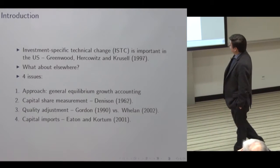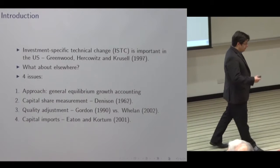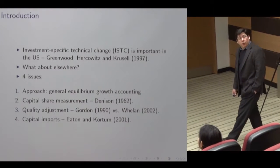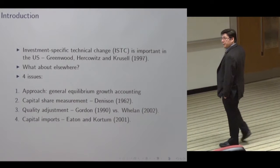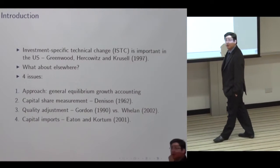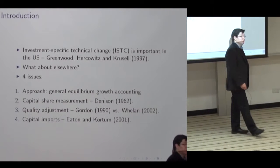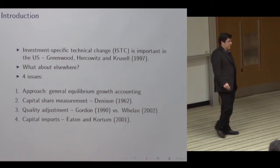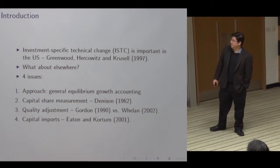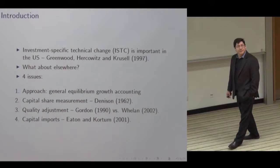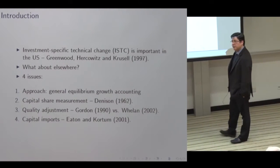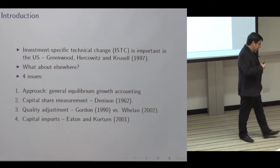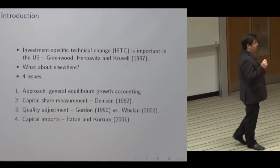The fourth issue — mainly a data issue — is that a lot of developing economies actually import a lot of their equipment. Maybe they don't import buildings, but they certainly import computers. For example, my father runs an agro business in Peru, and the $400,000 dryer and grinder that he uses is not from Peru. Since a lot of these countries may actually be importing their capital goods, we need to think about whether the typical general equilibrium growth accounting model used in this context is appropriate.